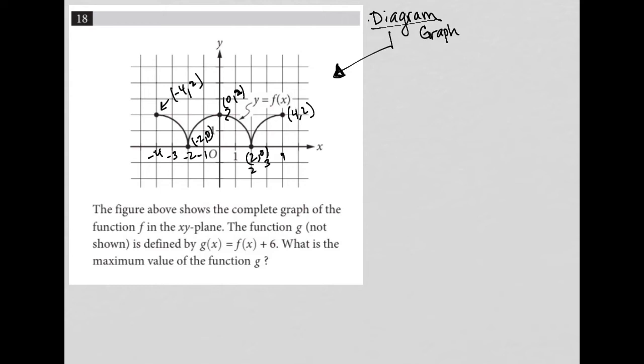The function g, not shown, is defined by, and I'll just write that down, g(x) equals f(x) plus 6. So what does this question tell us? The graph is f(x), so f(x) equals the graph that we see. But there's some g(x) that's not graphed, and it equals what I just wrote down.